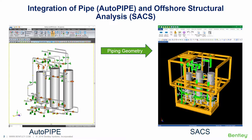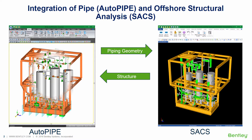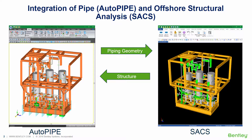Next, the structural engineer models the secondary steel to support the piping, as shown in green. We then send the structure back to AutoPipe and automatically connect the piping supports to the structure.